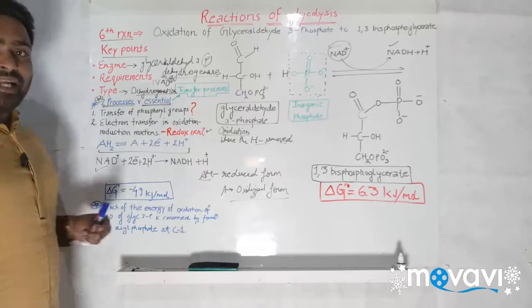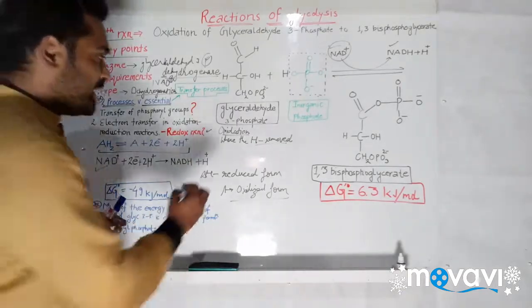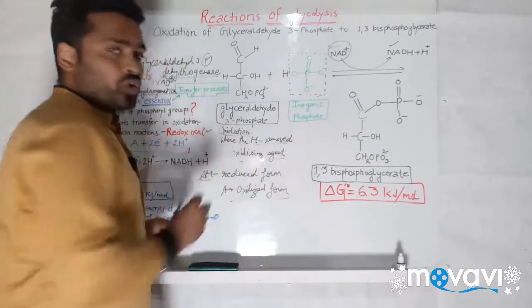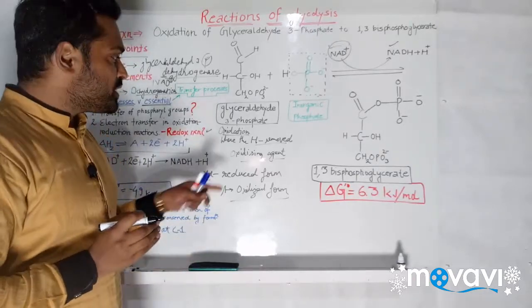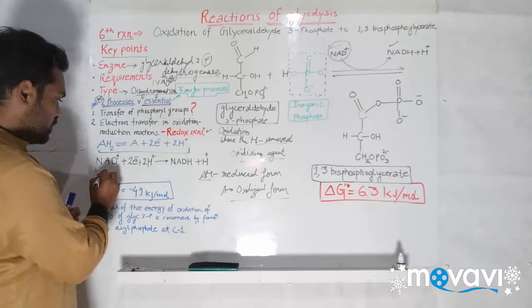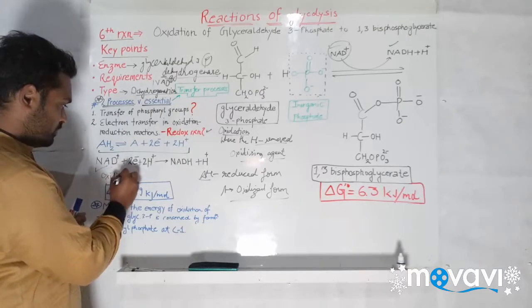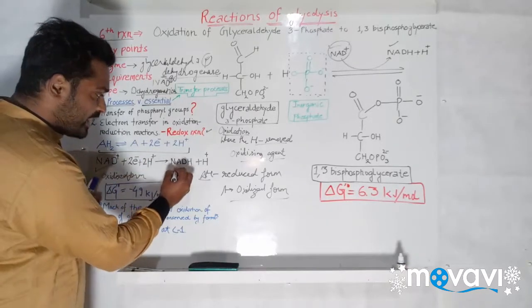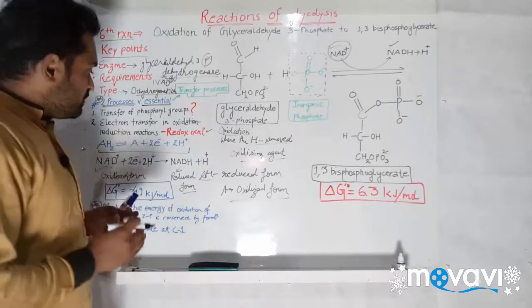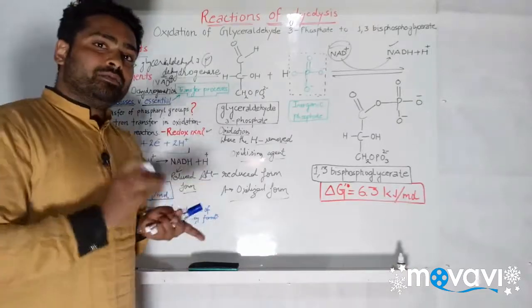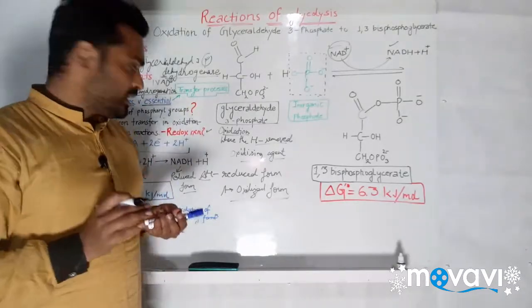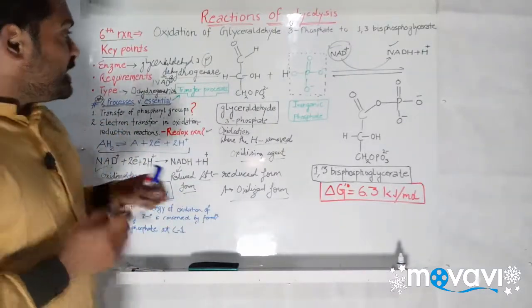NAD⁺ is the oxidizing agent — it oxidizes something and in the process gets reduced, because after oxidizing another molecule it takes electrons from that molecule. So NAD⁺ is the oxidized form, and after taking electrons it becomes NADH, which is the reduced form. From now on we will see NAD⁺ and NADH in most reactions, so we should know the reduced and oxidized forms.